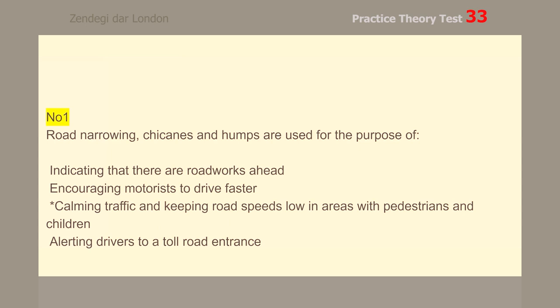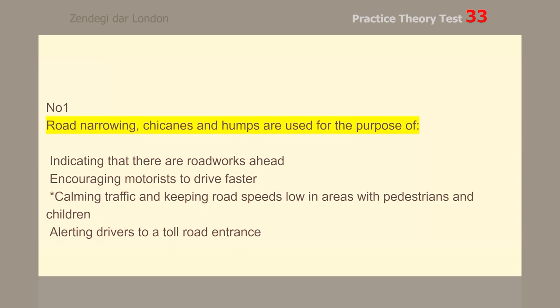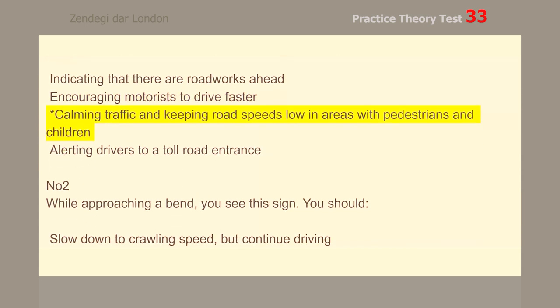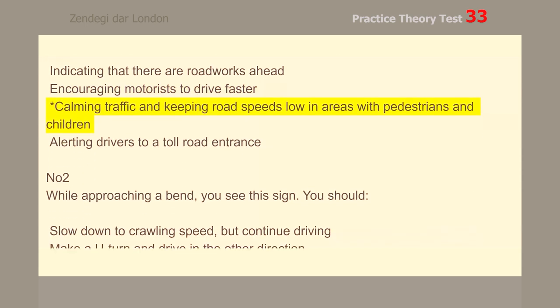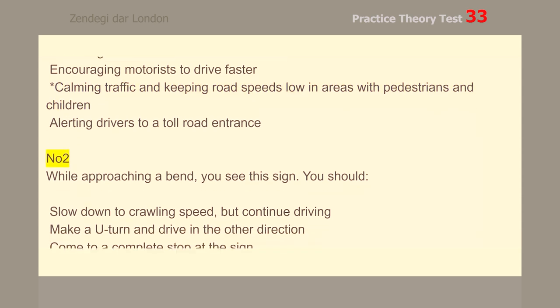Number 1. Road narrowing, chicane and humps are used for the purpose of calming traffic and keeping road speeds low in areas with pedestrians and children.